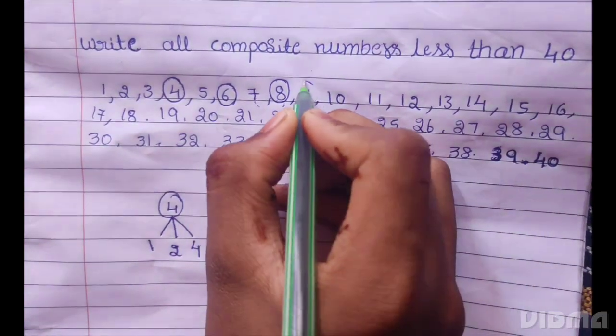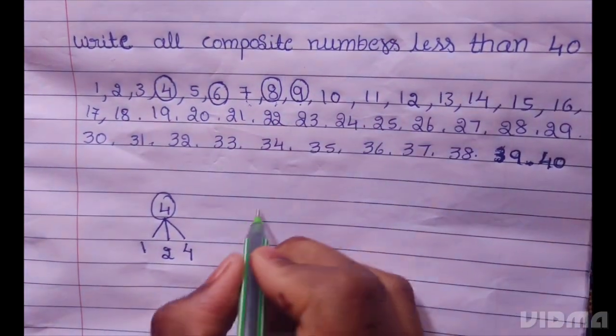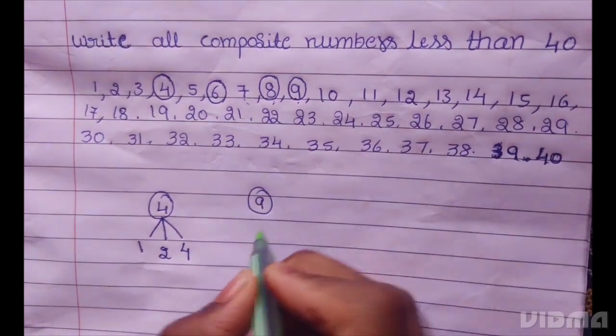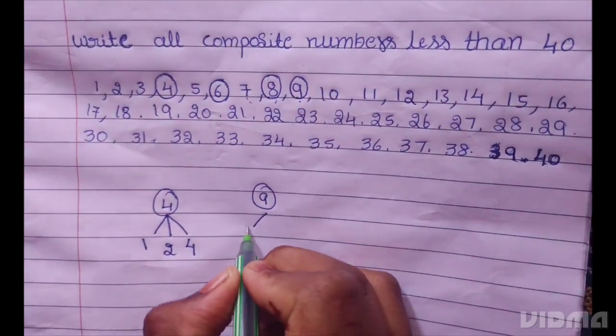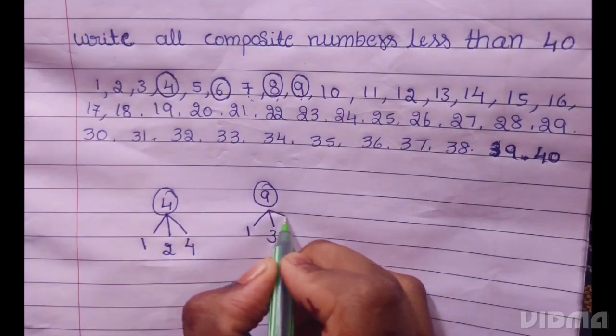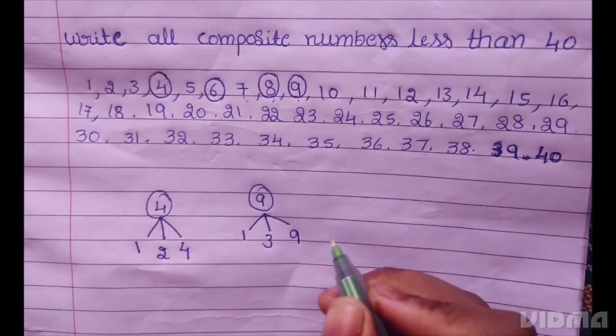9 is composite number. For example, 9 will come in 1 table, 3 table and itself 9 table.